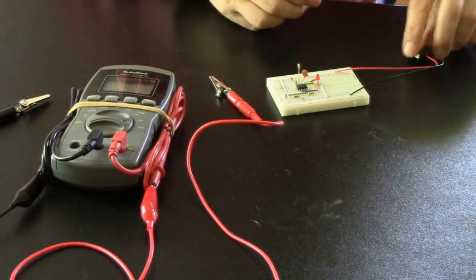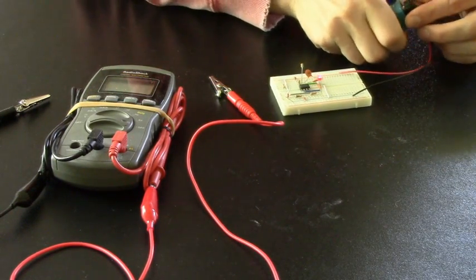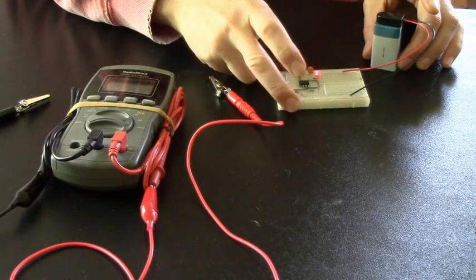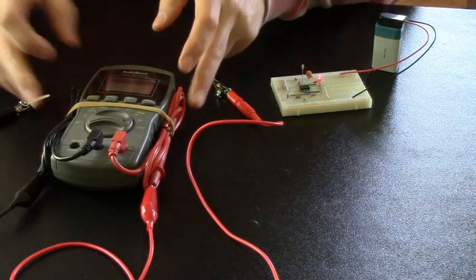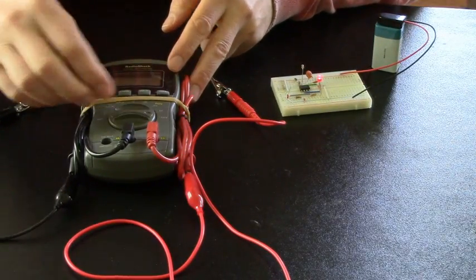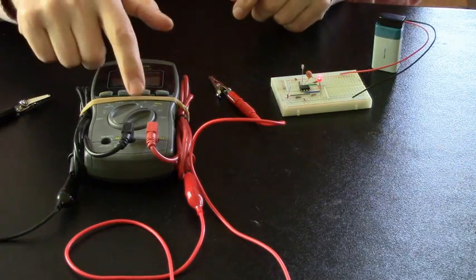So once you've gotten your zapper working, and you've got your little red LED lit up, it's always good to test it with a Hertz meter. And I get this at Radio Shack. It's a multimeter with HZ, an HZ setting.